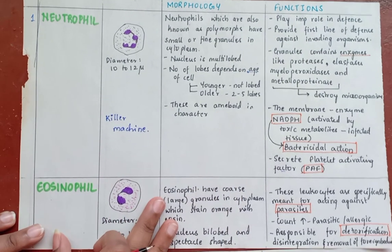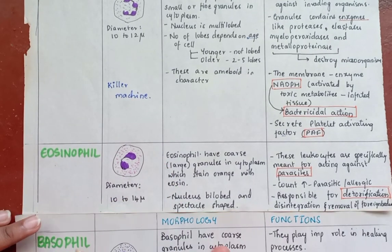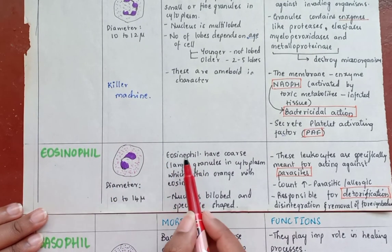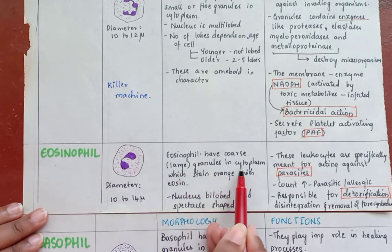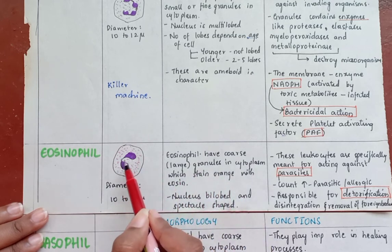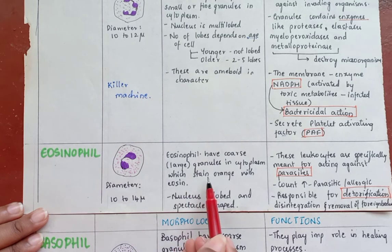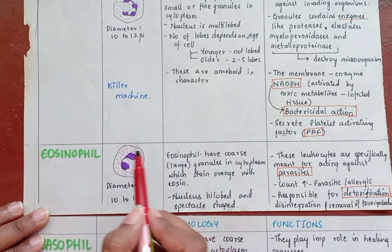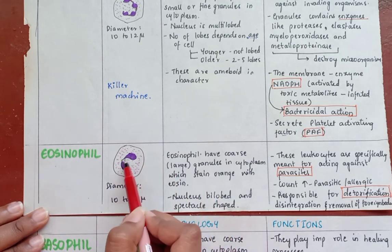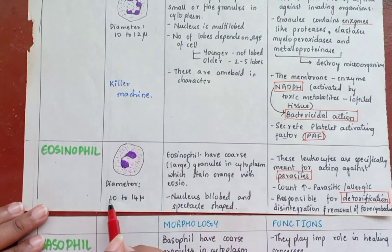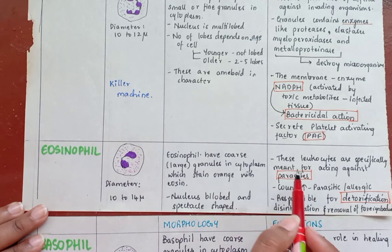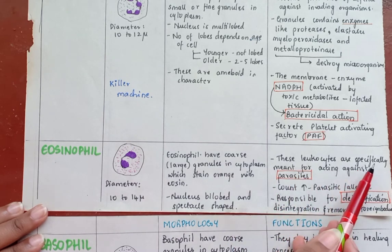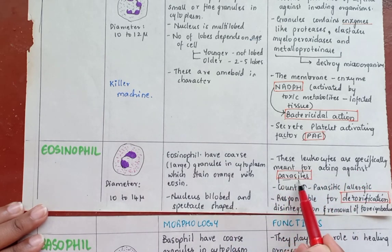The second leukocyte is the eosinophil. Eosinophils have coarse or large granules in the cytoplasm that stain orange with eosin. The nucleus is bilobed and has a spectacle shape, as seen in the diagram. These leukocytes are 10 to 14 microns in diameter.